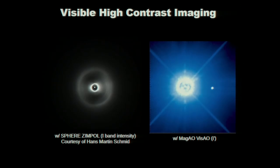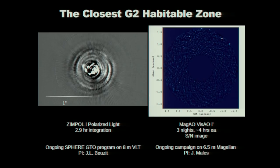But of course we really want to take data like this. This is a high contrast, very deep coronagraphic image of alpha Cen A. On the left, this is from the Sphere Zimpol camera, and on the right this is with the MagAO VisAO camera in I prime. When we process all that data, this is what you get. On the left we have a Zimpol image in polarized light with about a three-hour integration, and on the right is our fully reduced VisAO I prime data — actual images of the closest G star habitable zone.